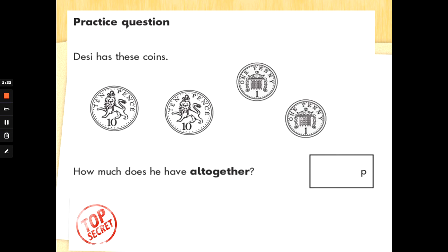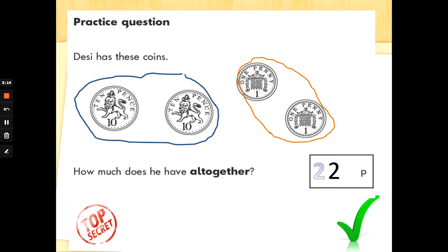Practice question. Desi, that's just somebody's name, has these coins. How much does he have all together? Now, all together is a maths word that means we need to add them. What I would do is start off by looking if there are any coins that are the same. So I can see two 10ps there. And I know that 10 add 10 is 20. And I've got two 10ps. And then I've noticed that I've got two 1ps. And I know that 1 add 1 is 2. So all together, we've got 20 in the blue circle and 2 in the orange circle. So we've got 22 pence. Well done if you knew that before Mrs G explained it.